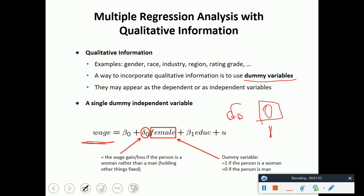But when del 0 is 1, that means this person is a female and then we would be getting the estimated wage of the female. The dummy variable would capture the qualitative information.